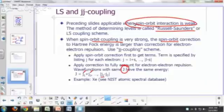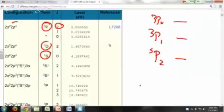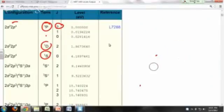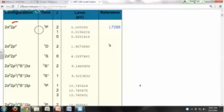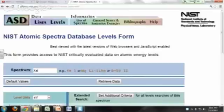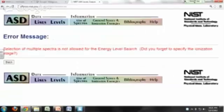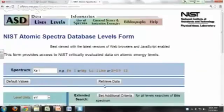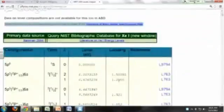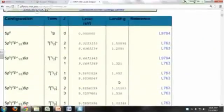So let's look at xenon, for example. Atomic spectral database. We expect that to have a very large spin-orbit interaction term. Xenon 1. Look at the term that's given there.